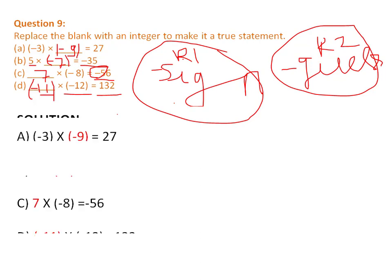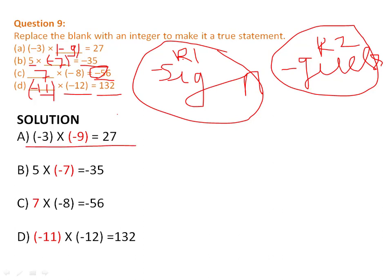Let's see the final answers. Fill in the blanks: (−3) × (−9) = 27; 5 × (−7) = −35; 7 × (−8) = −56; (−11) × (−12) = 132.